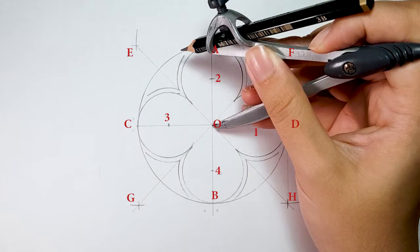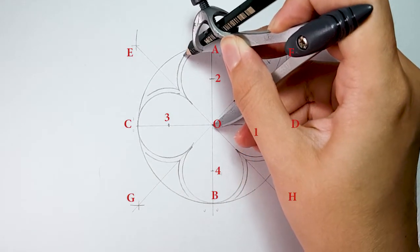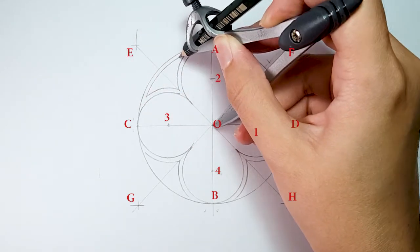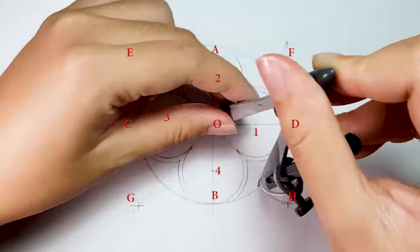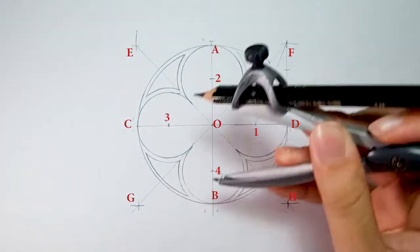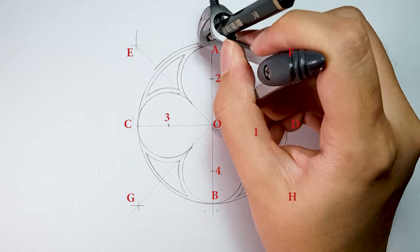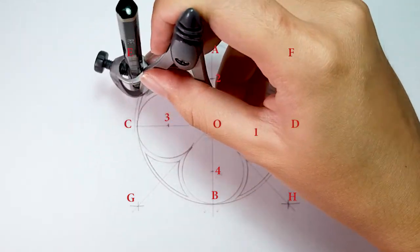Place your compass on point O and adjust to the end of the arc line. Then, complete the join line. On the same point, adjust your compass to the marked point outside of the circle and draw a circle.